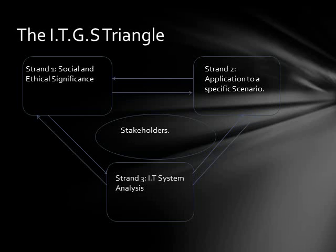The main content for ITGS is found in the ITGS triangle. Every issue with regards to ITGS — every technology-based issue of every particular system — has every part of this triangle. In the center is what is called stakeholders. This is basically what the issue revolves around. The stakeholders are, just as the name says, people who hold the stake in the issue. The usage of a system can either positively or negatively affect different groups or individuals, and whoever those individuals or groups are, those are the stakeholders. The issue I've been referring to is called the social and ethical significance — that's the first of three strands.